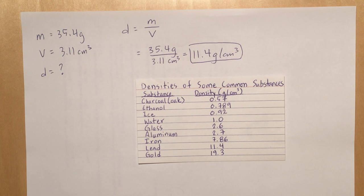When you do that calculation, you get 11.4 grams per centimeters cubed. From there you want to look at the table that's presented to you, densities of some common substances, and just look through that table.